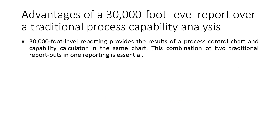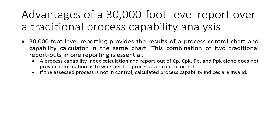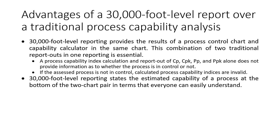30,000-foot-level reporting has many advantages. This form of reporting provides the results of a process control chart and a capability calculation in the same chart. This combination of two traditional report outs in one reporting is essential. Process capability indices calculation and report out of CP, CPK, and so on alone does not provide information as to whether the process is in control or not. If the assessed process is not in control, the calculated indices values are invalid.